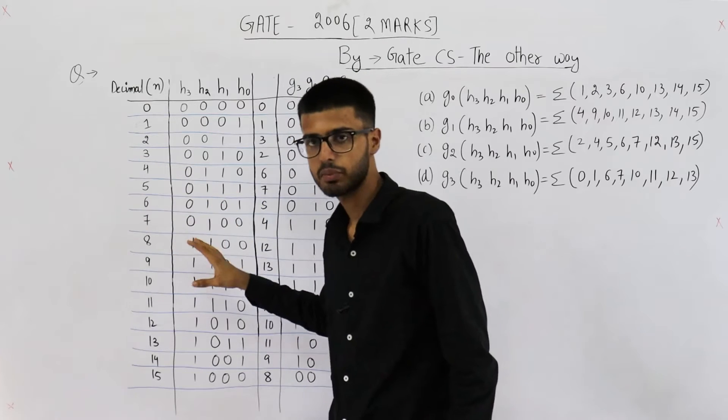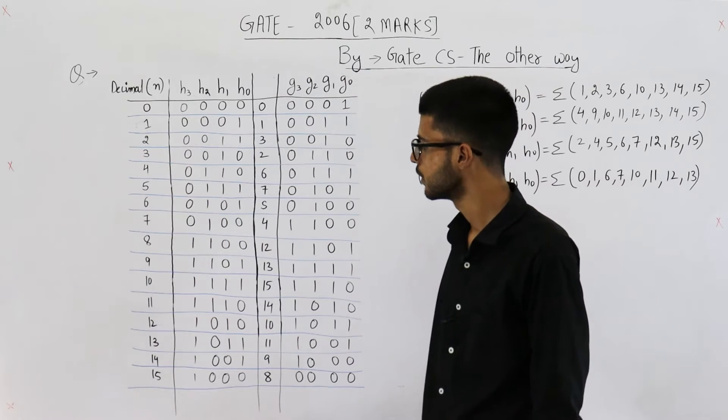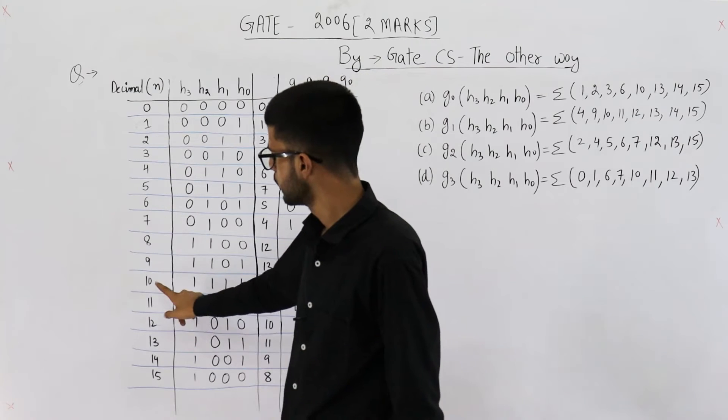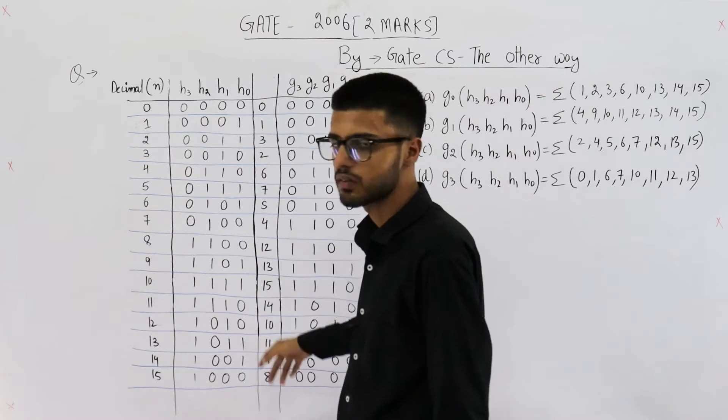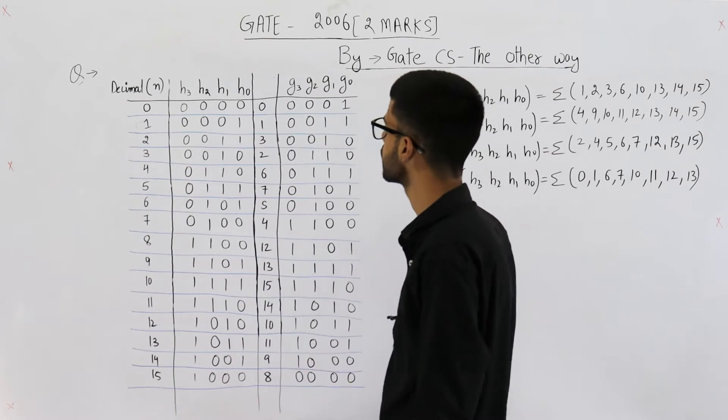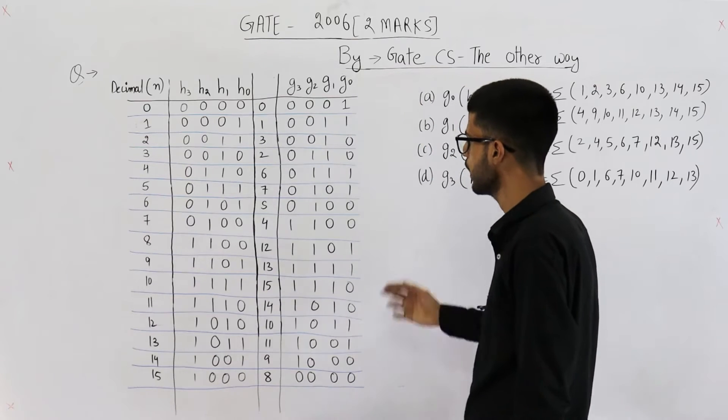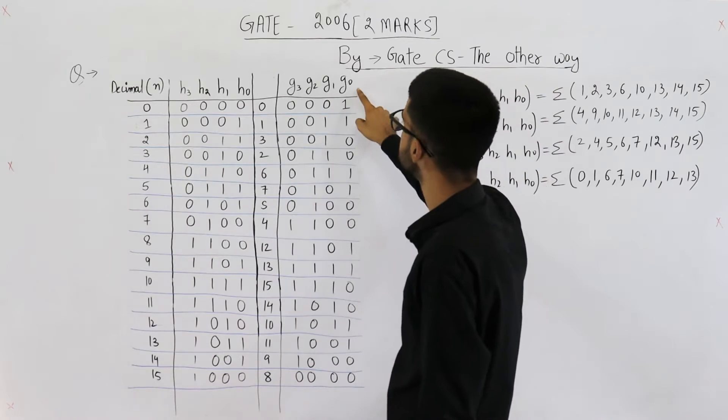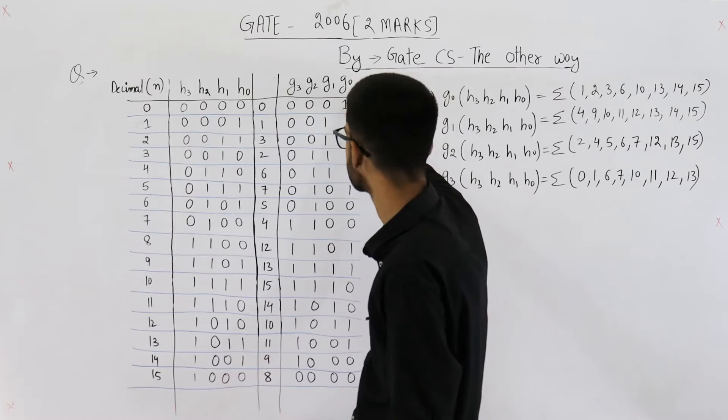I'll also tell you the method of writing these gray codes. But first of all, let's solve this question. Gray code for 10 is all 1's. Similarly, these are all the gray codes.